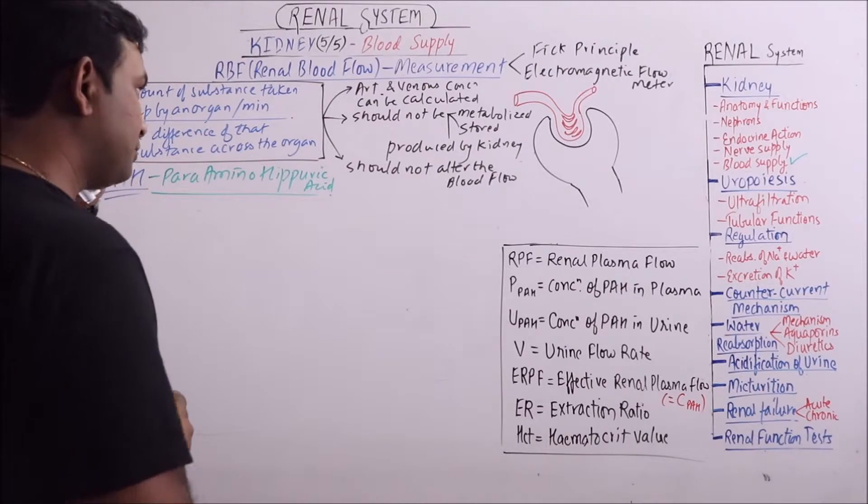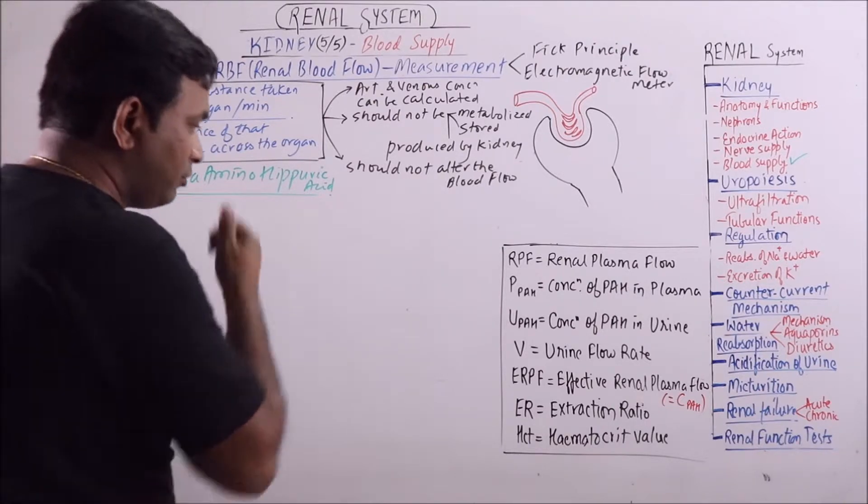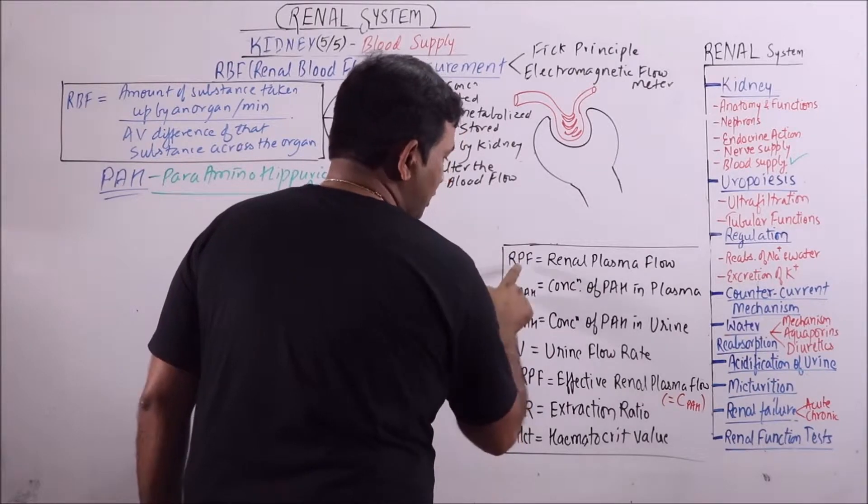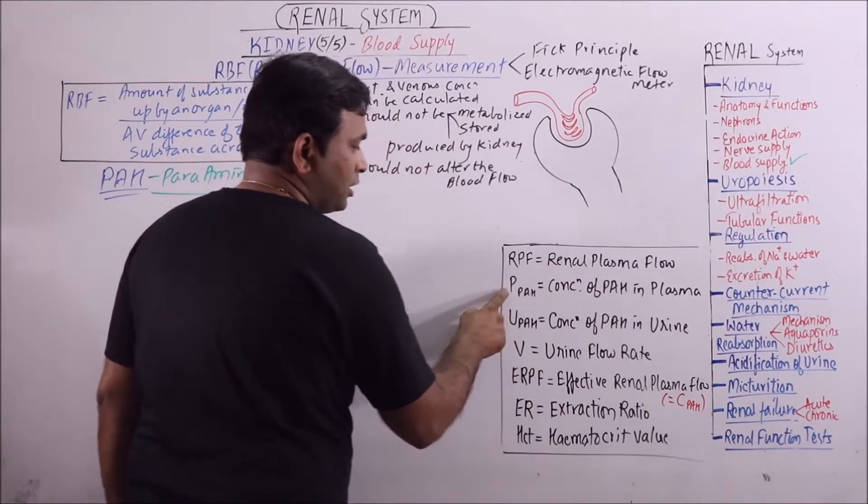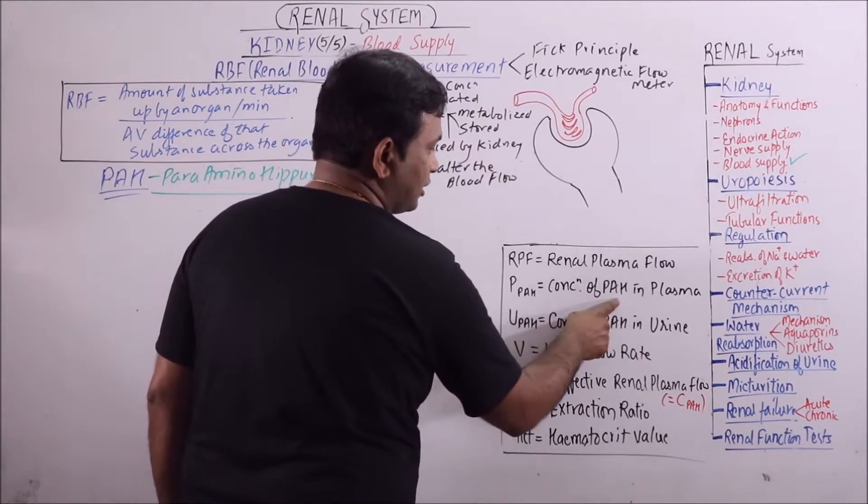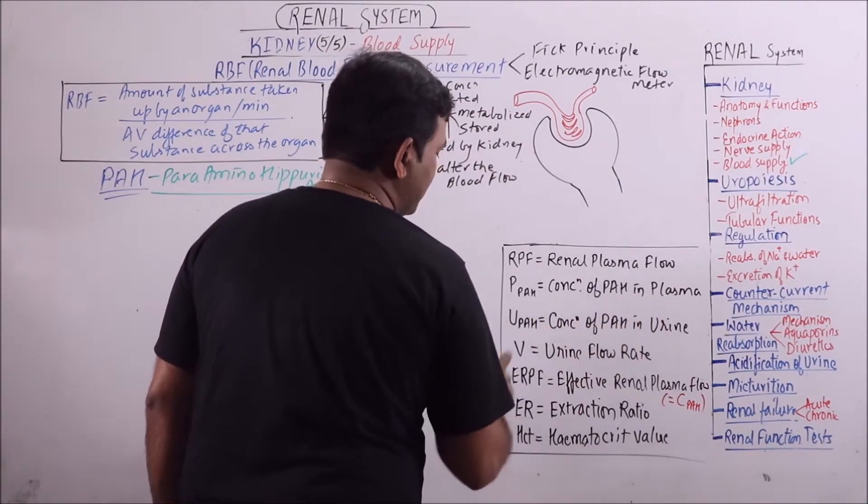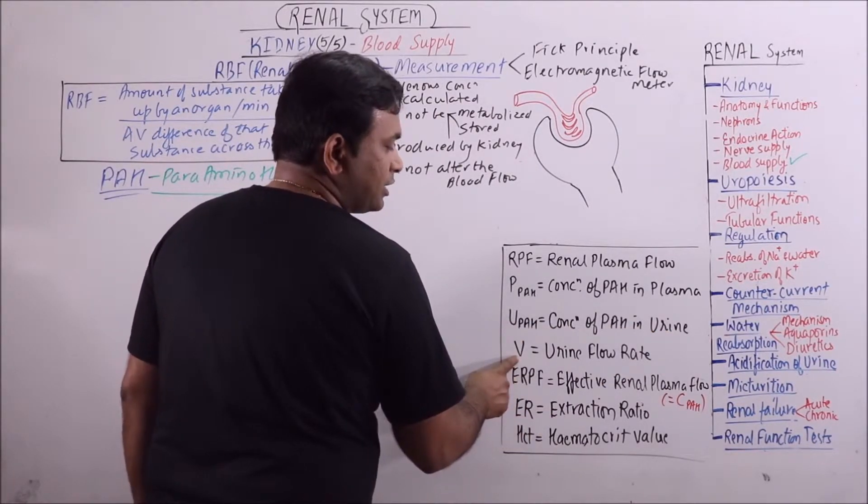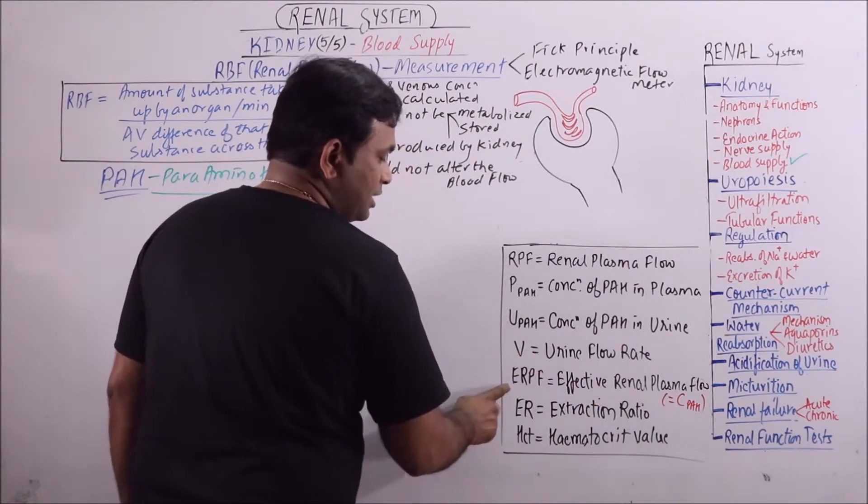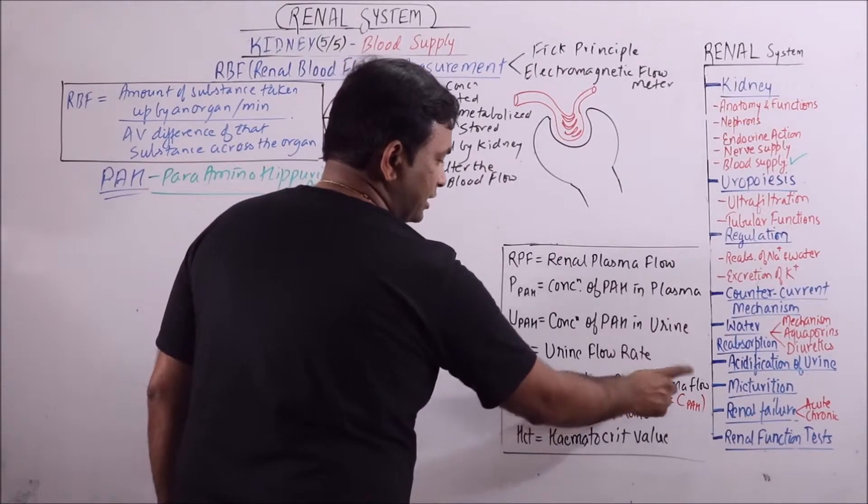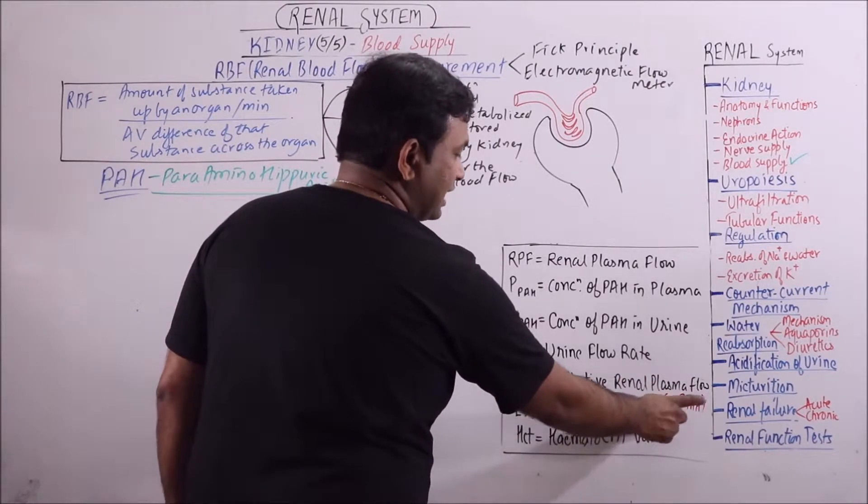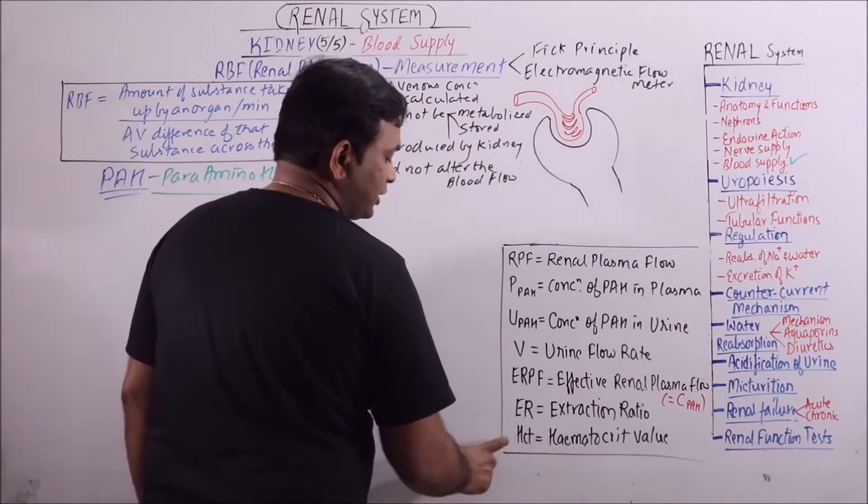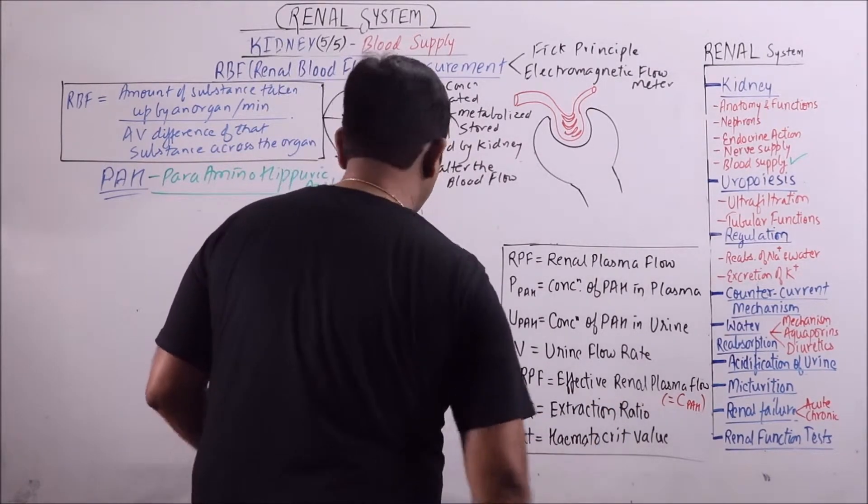Now we will calculate the RBF, but before that we should be familiar with these full forms. RPF is renal plasma flow. PPAH is concentration of para-aminohippuric acid in plasma. UPAH is concentration of para-aminohippuric acid in urine. V is the urine flow rate. ERPF is effective renal plasma flow which is equivalent to the clearance of PAH. ER is the extraction ratio and HCT is the hematocrit value.